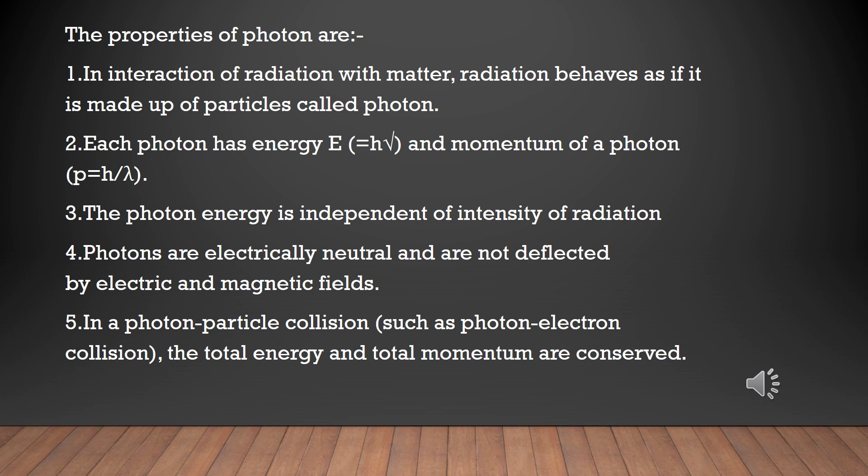Properties of a photon. When light is interacting with matter, it is observed that radiation behaves as if it is made up of particles called photons. Each photon has energy h*nu and momentum h divided by lambda. Photon energy is independent of the intensity of light. Photons are electrically neutral and are not deflected by electric and magnetic fields. In photon-particle collisions, such as a photon and an electron, the total energy and total momentum are conserved.